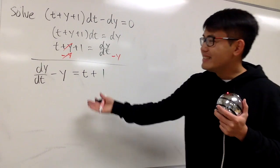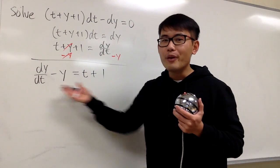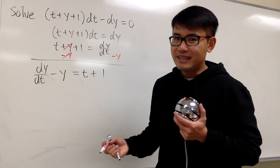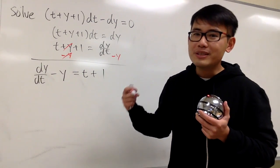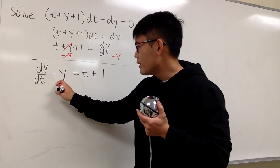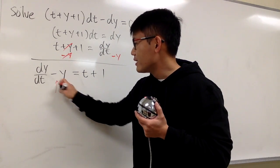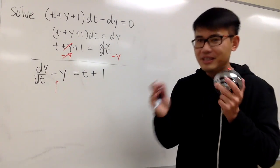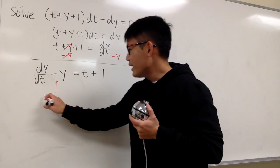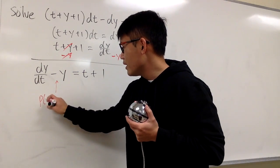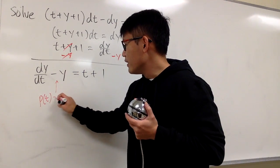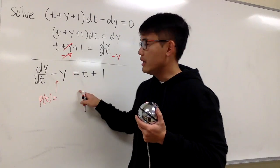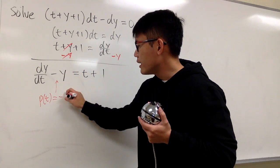That's great — this is the standard form now. With this being said, we can use the integrating factor, and be sure you look for the correct p(t) in this case. Right here, p(t), the function in front of the y, is negative 1.